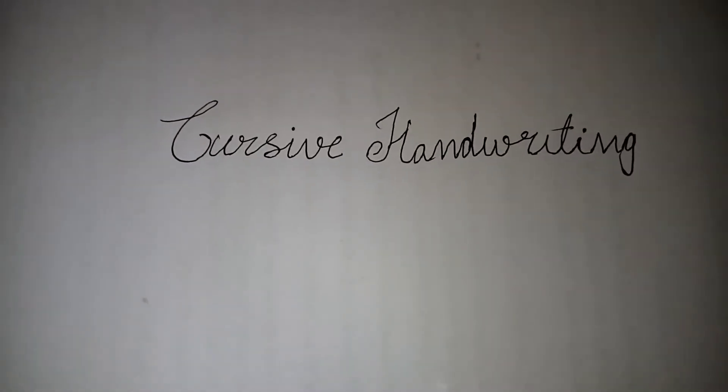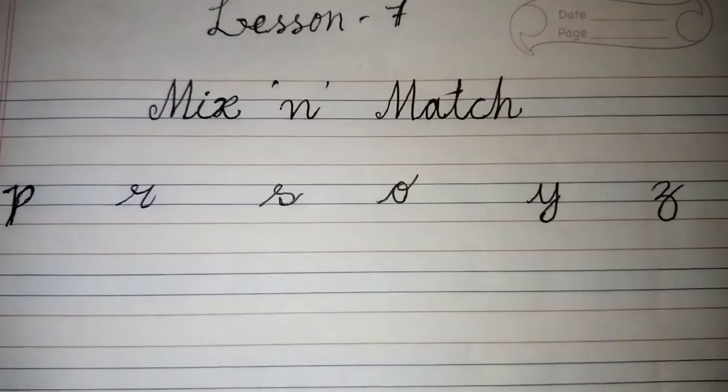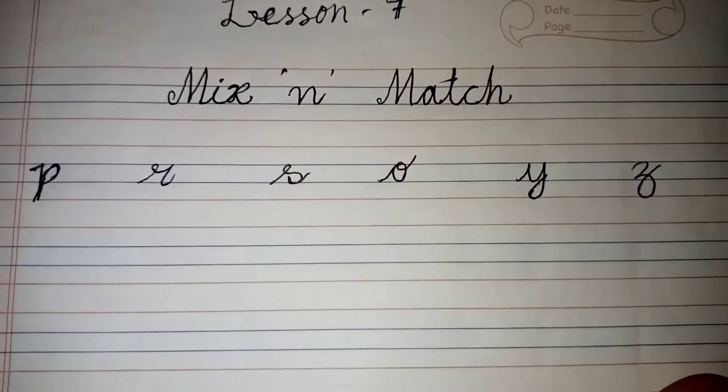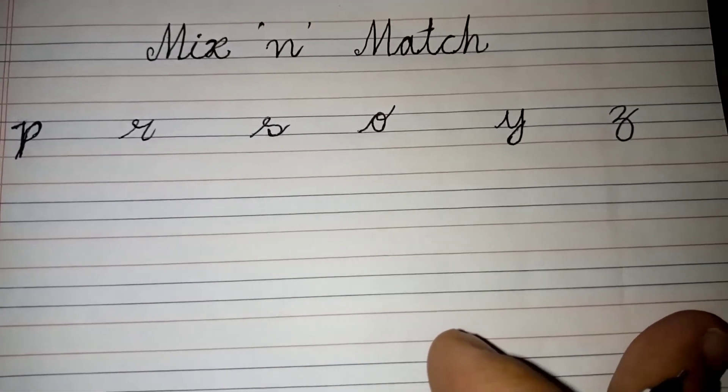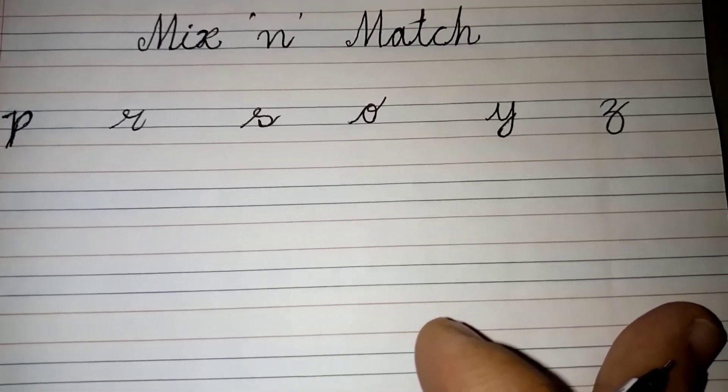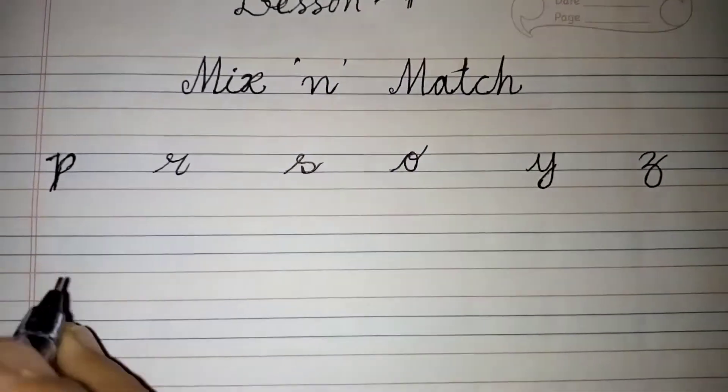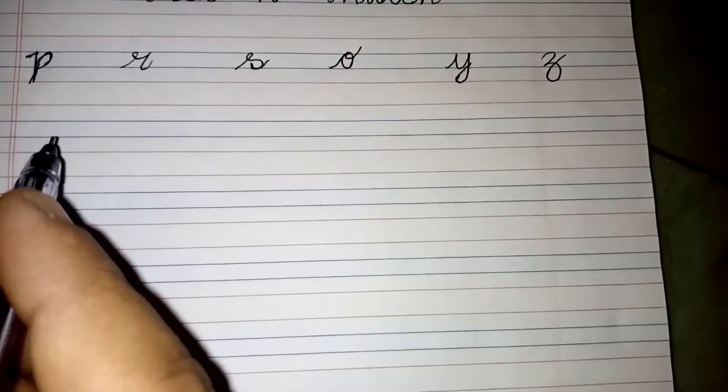Hello, welcome back to cursive handwriting lesson number seven. Today let's see what lesson number seven is: mix and match. What is mix and match letters? Mix and match letters have mixed attributes of two or more of the other categories. Here we have letters like p, r, s, o, y, and z.